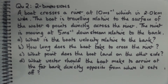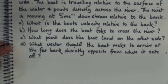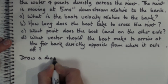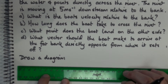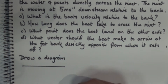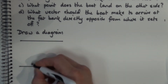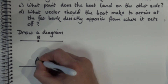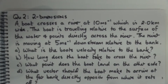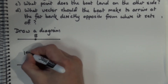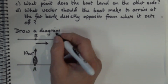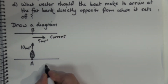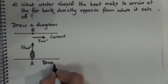Let's look at the solution, starting with part A: what is the boat's velocity relative to the bank? To help us, we need to draw a diagram first. Here are the two banks. I'll label point A and point B directly opposite, and here's my boat travelling at 10 metres per second. The current is travelling at 5 metres per second downstream, going from left to right along the bank.